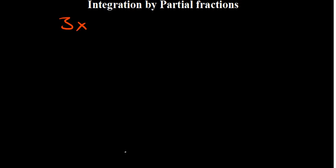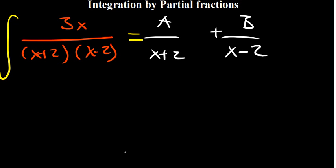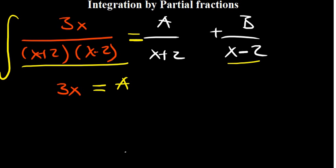Now let's look at another practice example. In this case we have the integral of 3x over (x+2)(x-3). We need to resolve it first into its partial fractions, so the same principle applies: A over (x+2) plus B over (x-3). Multiplying throughout, we remain with 3x on this side, and A is multiplied by (x-3) while B is multiplied by (x+2).